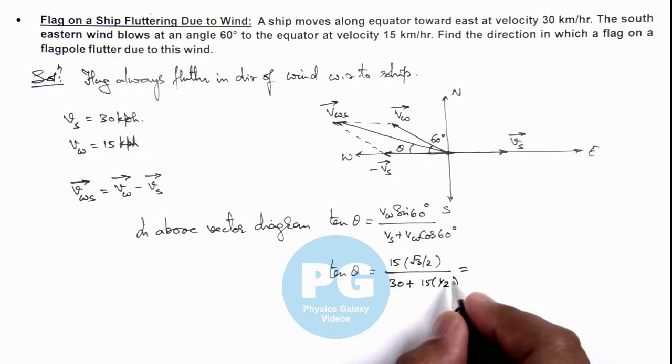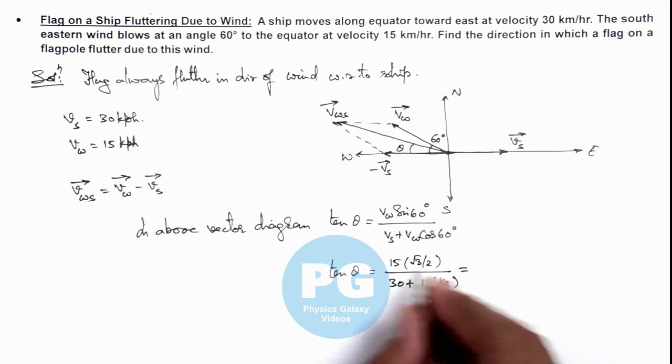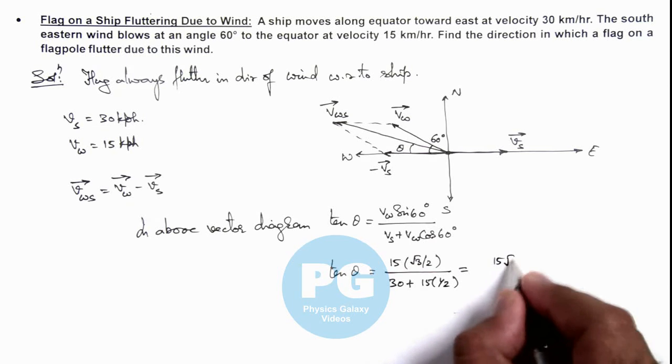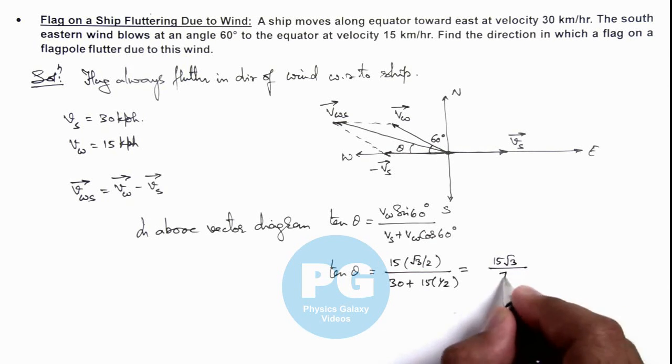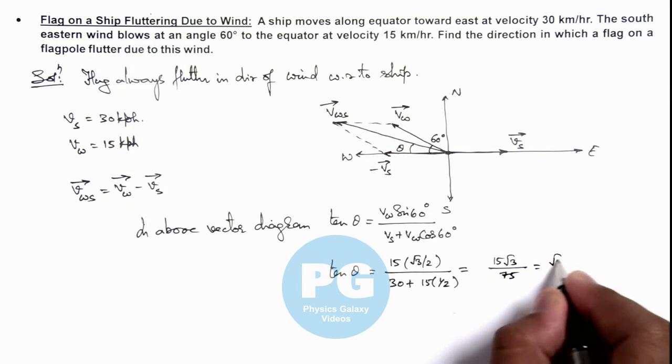Further simplifying, we're getting 15√3 divided by 60 plus 15, which is 75, giving us √3/5.